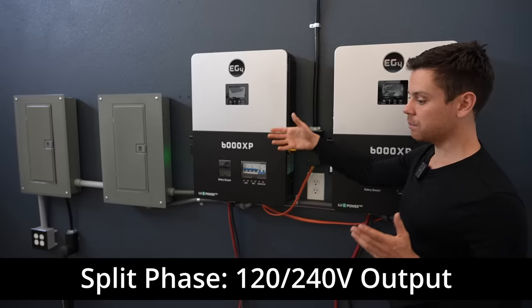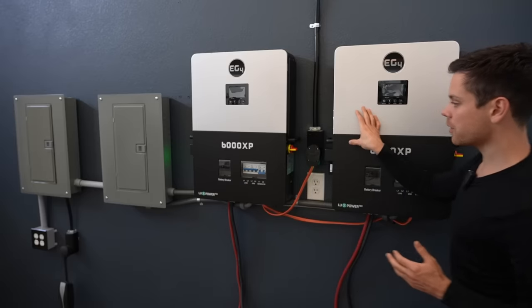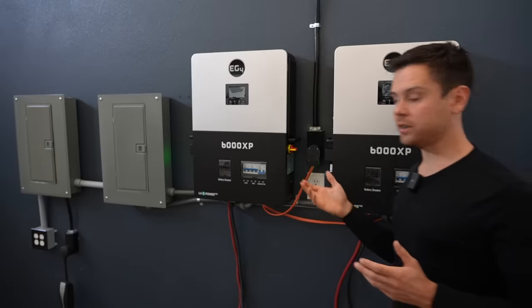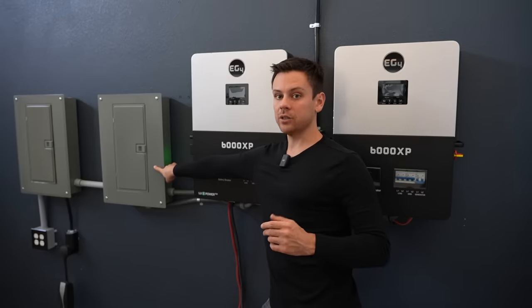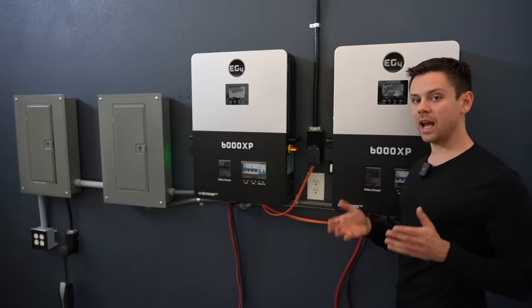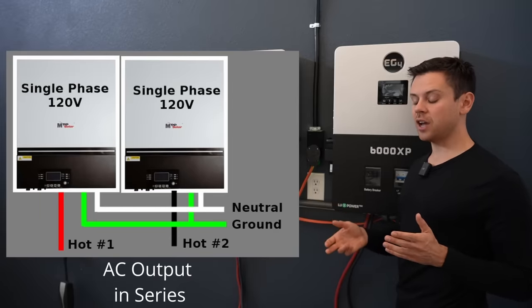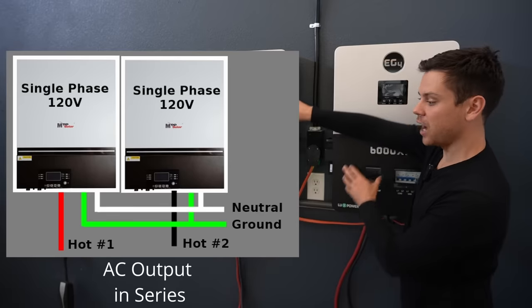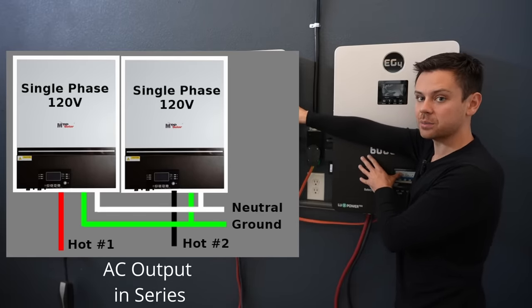If you want to make your system bigger, you can just throw another one on the wall or three or four and then connect them all together easily with a load center that you can buy at Home Depot or Lowe's. On previous types of systems the AC output was in series, so you'd have to have two units to make a split phase output.